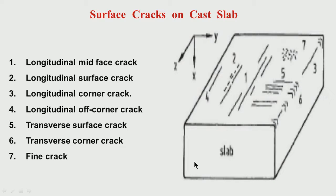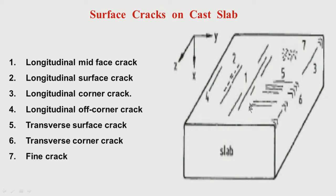Now let us see what are the surface cracks on cast slab — that means cracks visible on the surface of the slab itself. One is the longitudinal mid-face crack. This is around the middle area of the broad surface. This is called the narrow surface; this is the broad surface. You may have a crack in the mid-surface of the narrow surface also, but relatively the incidence is more on the broad surface.